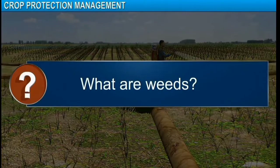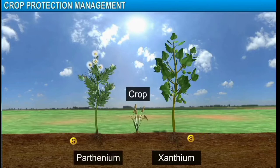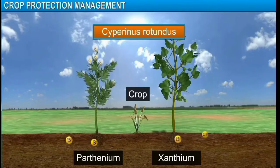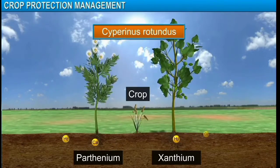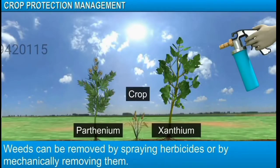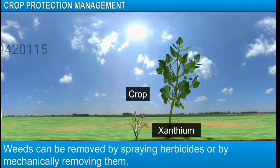Weeds like Xanthium, Parthenium and Cyperinus rotundus are unwanted plants in a crop field. They compete with the crop plants for food, space and light, and thereby reduce crop growth. Weeds can be removed by spraying herbicides or by mechanically removing them.